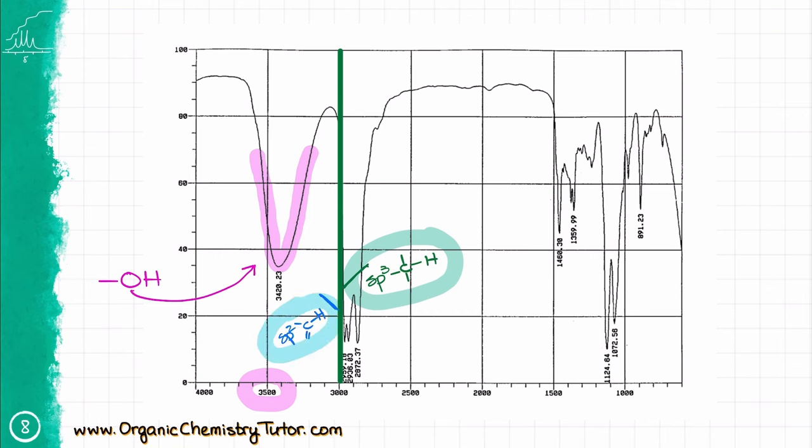Signals leaning onto your 3000 from the left side, or in other words, signals that are just a little bit over 3000, like 3050, those are SP2 hybridized carbon hydrogen stretches. You'll expect to see those if you have double bonds in your molecule and those double bonds have hydrogens on them. This molecule doesn't have any, so we are not seeing anything there.